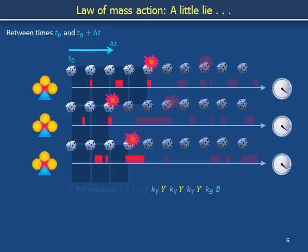What is the number of reactions we can count between an initial time t0 and a final time t0 plus delta t? This depends on how much red shading we see in each timeline on average — in other words, the product of three factors of k sub y times concentration y and a factor of k sub b times concentration b. The number of reactions also depends on the efficiency with which dice rolls convert red shading into productive chemical reactions, symbolized by the coefficient k sub d, where d stands for dice. The number of reactions depends on the total number of timelines, which is proportional to the concentration of magenta hotpants, or concentration capital M. And it depends on the duration delta t. Longer time intervals embrace more reactions.